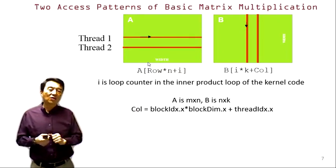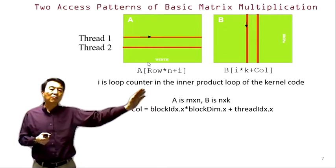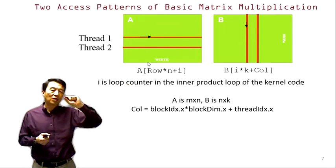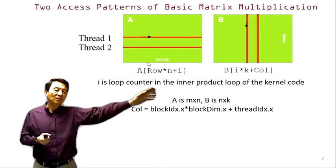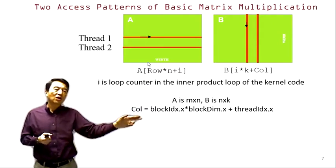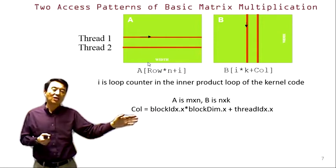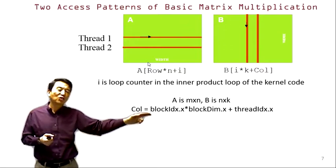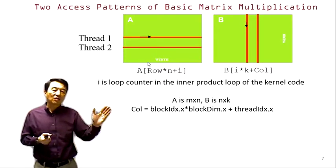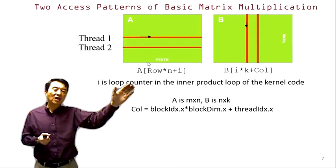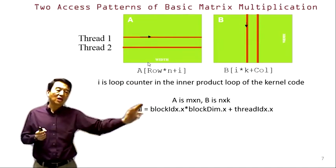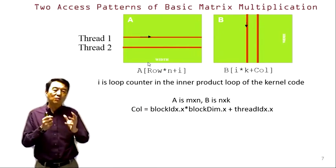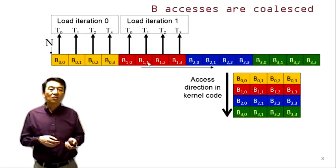If we decompose the indices used for accessing matrix B, we see that the term i multiplied by k (where k is the loop index and K is the width of matrix B) is independent of threadIdx.x. The column index col is defined as blockIdx.x * blockDim.x + threadIdx.x, so the index splits into (i*K + blockIdx.x * blockDim.x), which is independent of threadIdx.x, plus threadIdx.x itself — fitting perfectly into the coalesced memory access pattern.